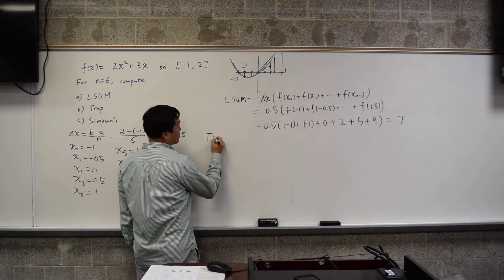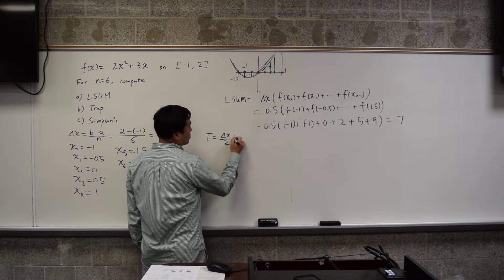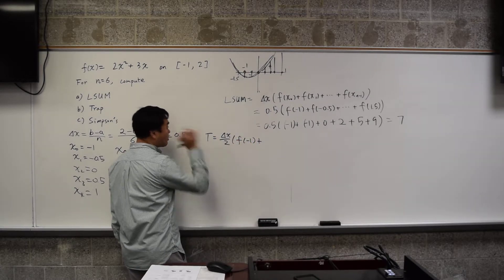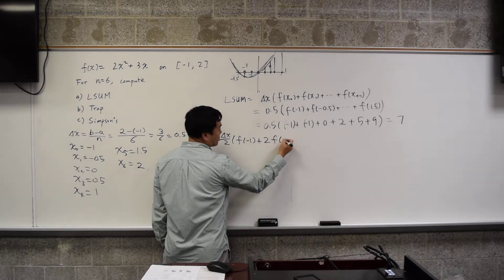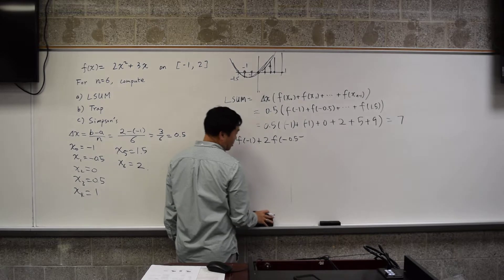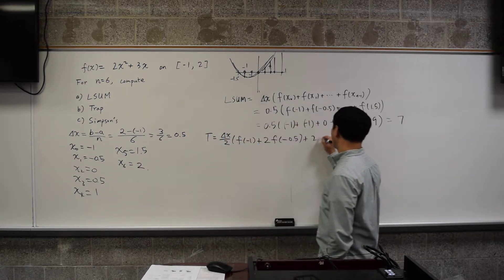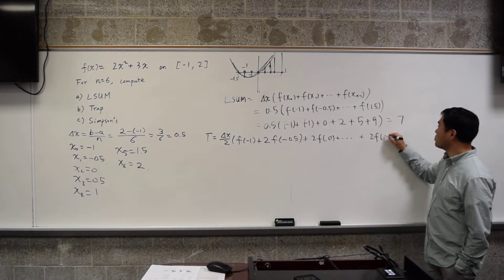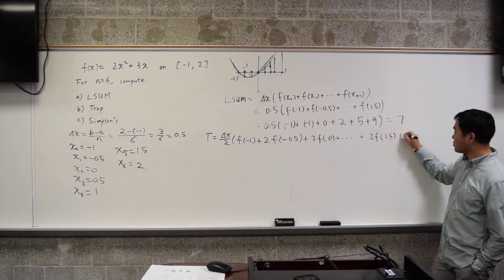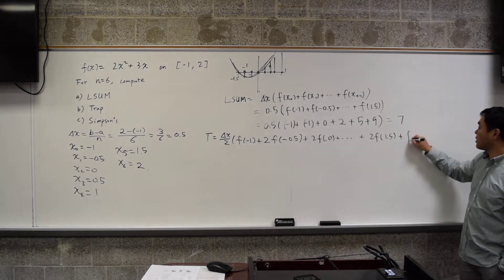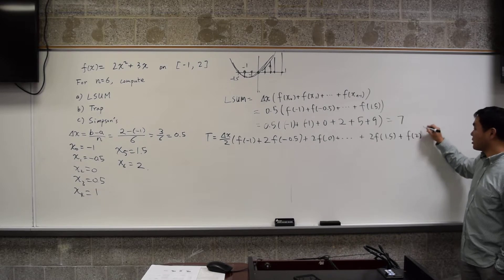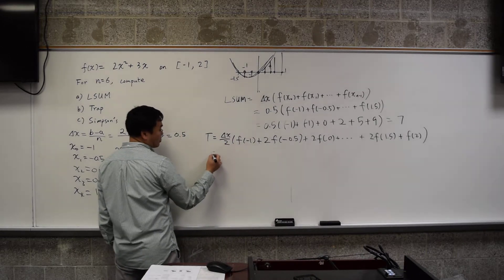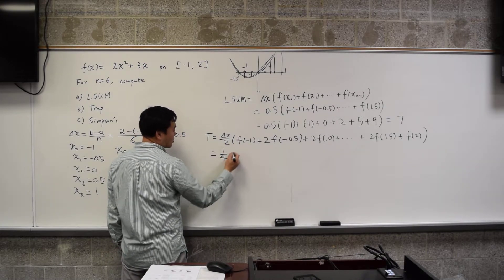Okay. For the trapezoidal, you need delta x over 2 times f at negative 1. The very first number doesn't have anything multiplied, but the next one you start multiplying by 2. And the last one, one before the last one, which is 1.5, also becomes multiplied by 2, whereas the very last one you don't multiply by 2. That's the trapezoidal rule. So delta x is 0.5 divided by 2, that's 0.25. Maybe it's easier to do one-fourth. So let's just say one-fourth.